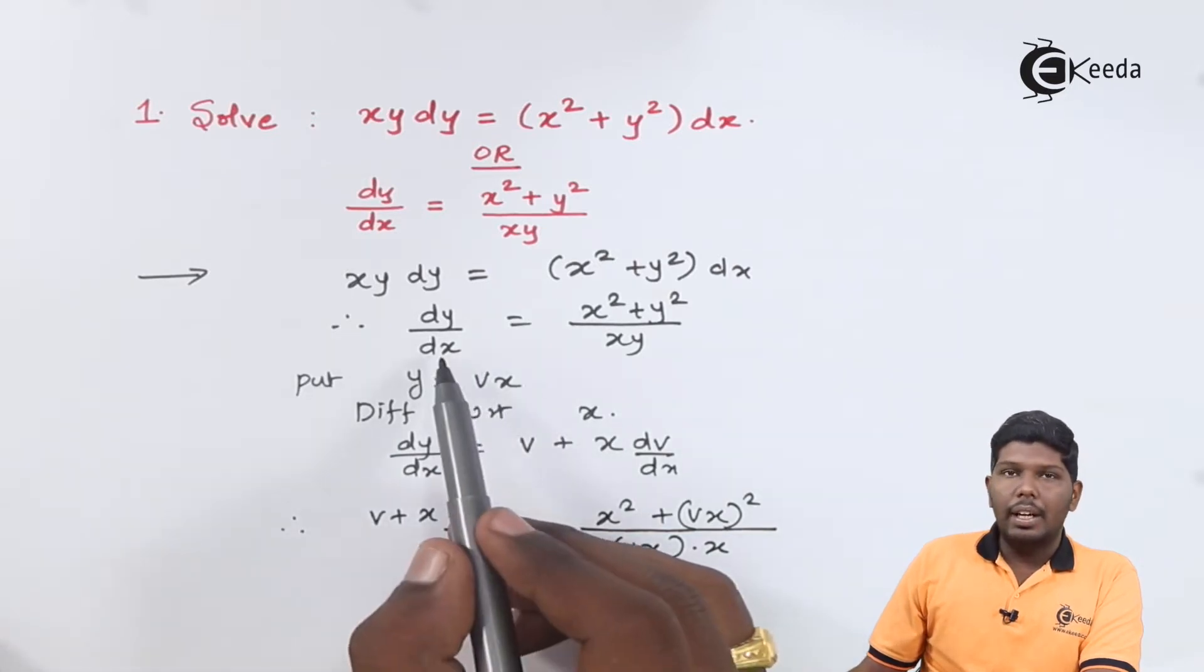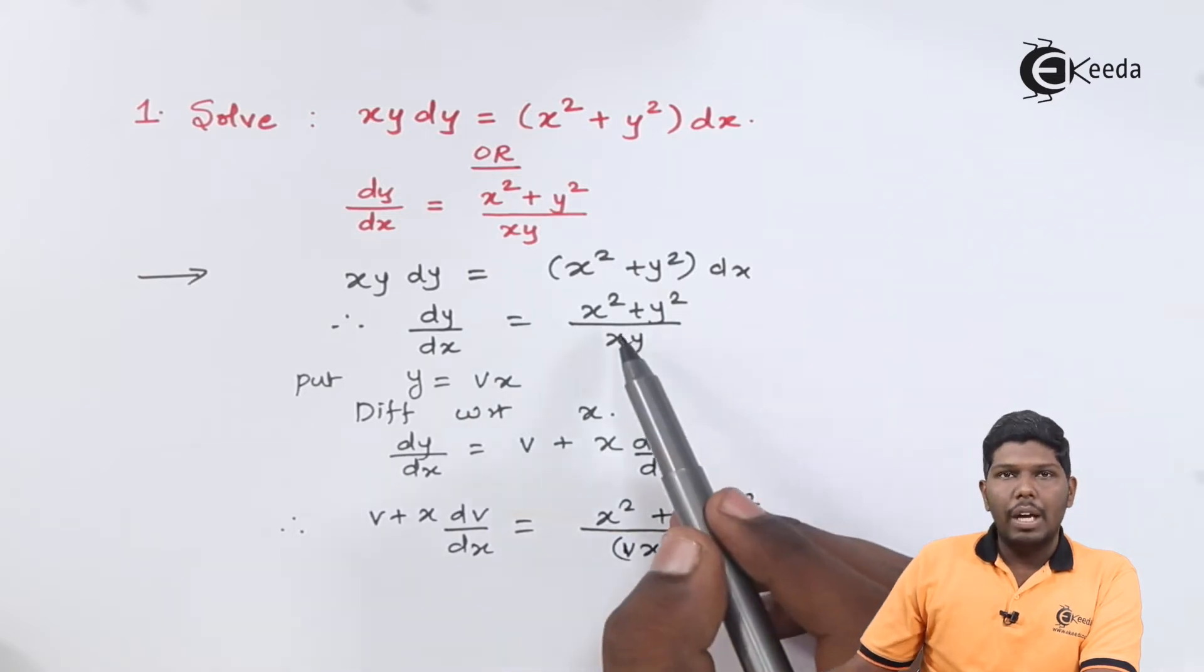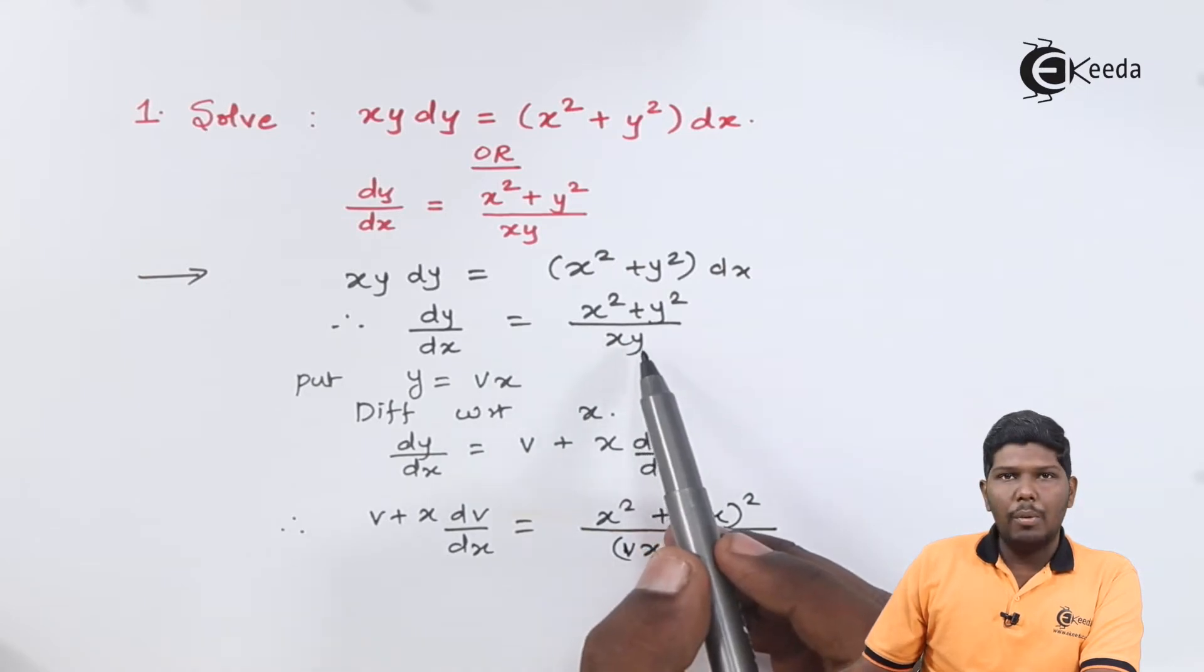As you can see here, the value of dy/dx will be v + x(dv/dx) = (x² + y²), which will become (vx)² upon y, that will be vx into x. Now the next step will be simplification of right hand side.